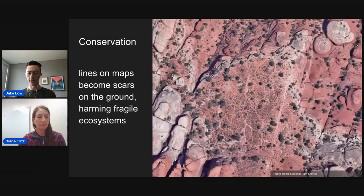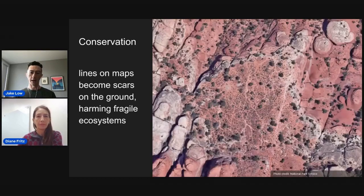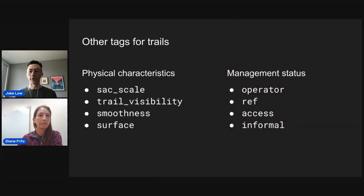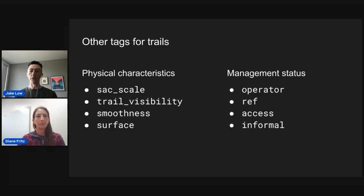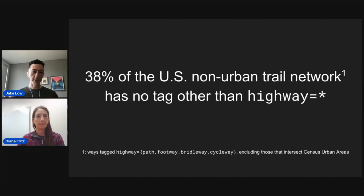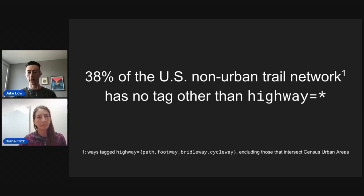This has ecological consequences too. These unofficial trails aren't built to handle the same level of foot traffic as official high-use trails. They don't have facilities like backcountry campsites, pit toilets, or even signage. When that signage doesn't exist, we see the proliferation of a spiderweb of social trails, which harms the landscape. Of course, highway=path isn't the only tag we have in OpenStreetMap — we have many other tags to describe physical characteristics and management status. But the challenge is that almost 40% of the US trail network has no tag at all other than just highway=path, making it really difficult to create good trail maps.